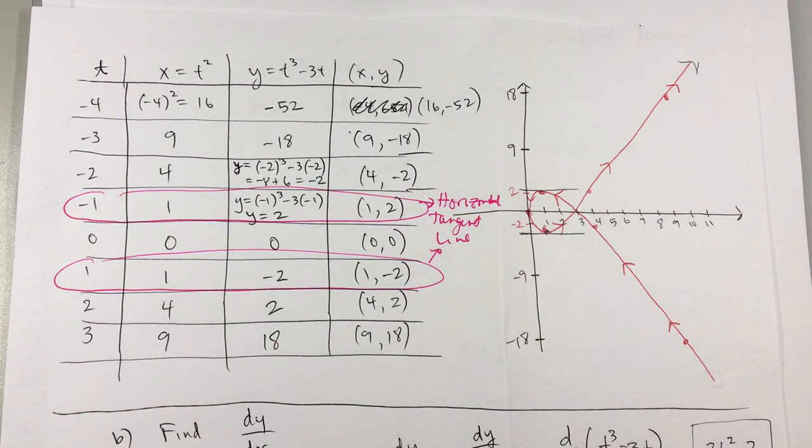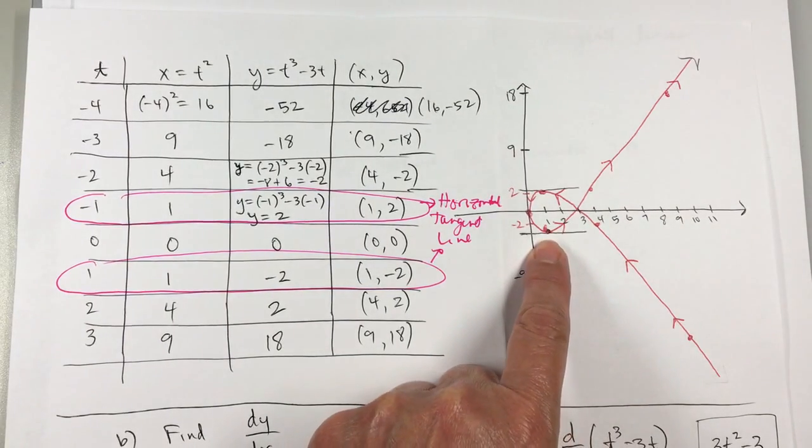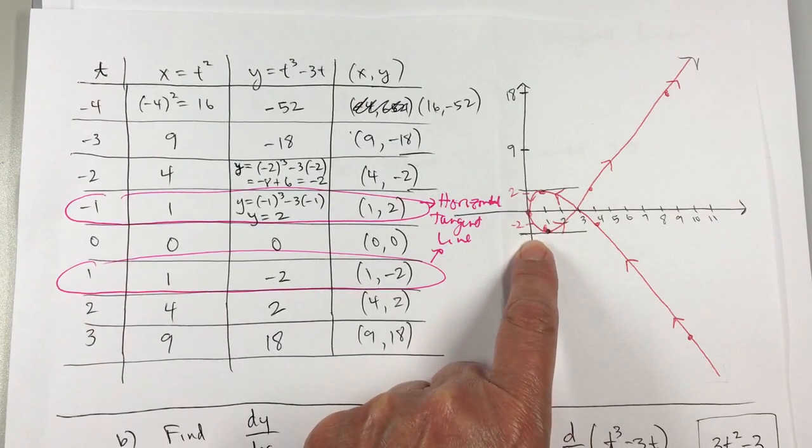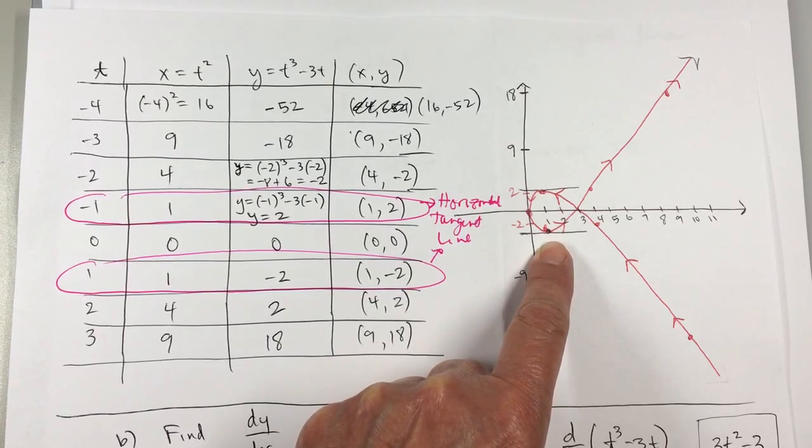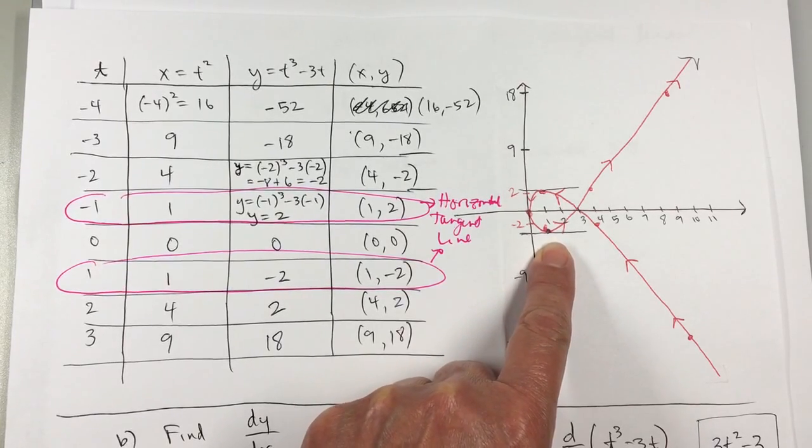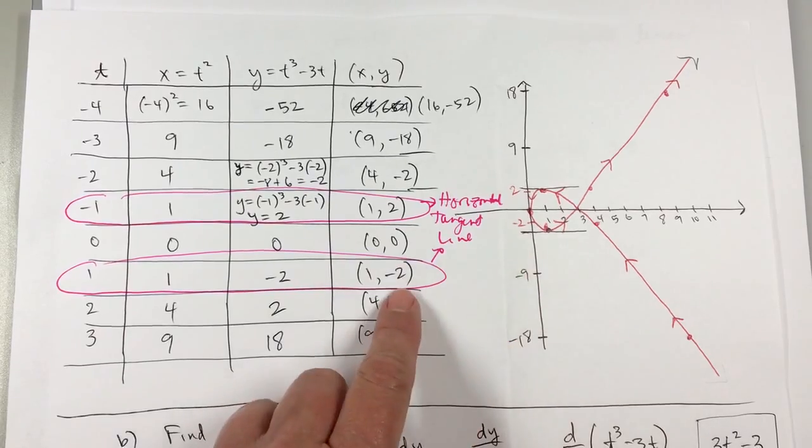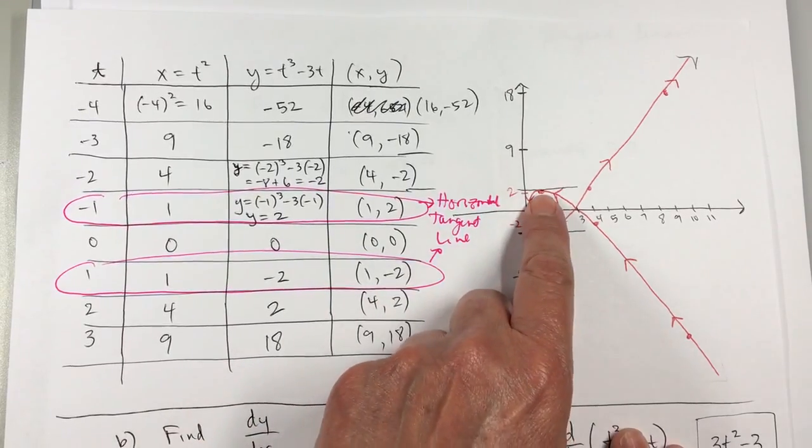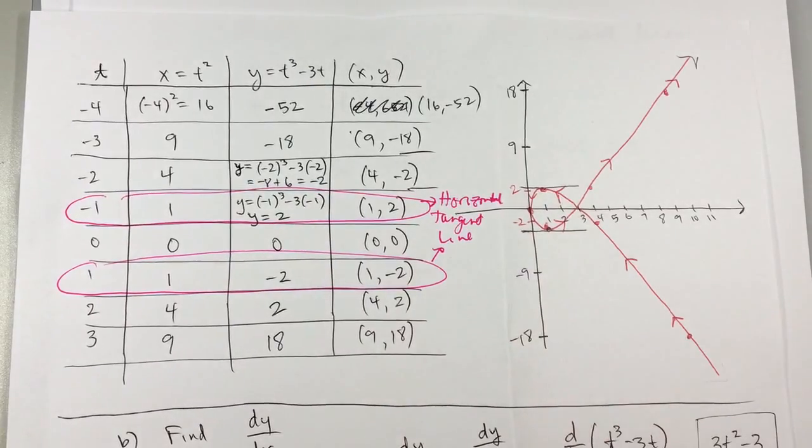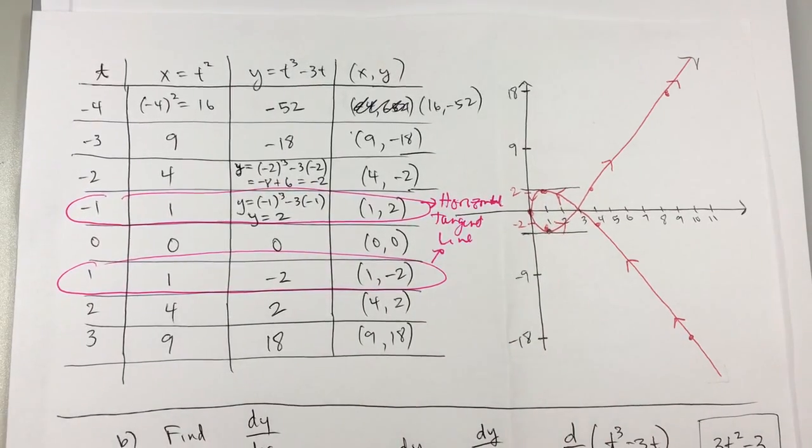And then you can find the equation of those lines. Oh, my graph is way off, isn't it? What's the equation of this line? Y equals? My graph is off. Y equals negative 2. Look, that's the x coordinate. And then this one is y equals 2. The picture is just really sloppy there.